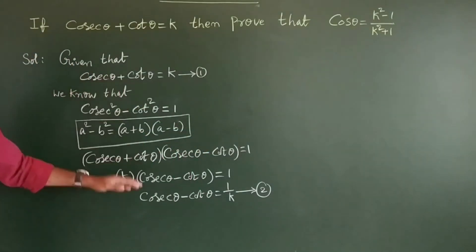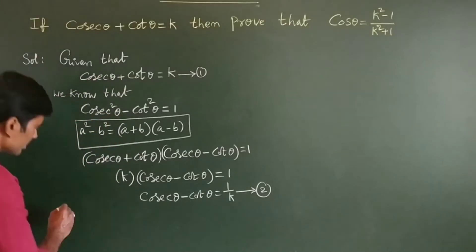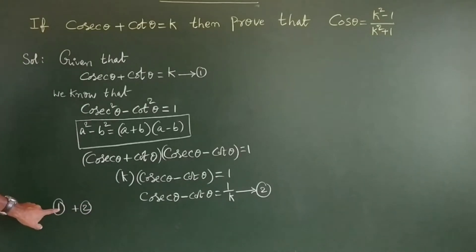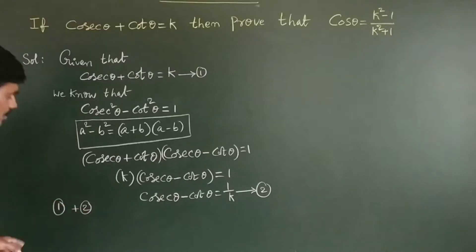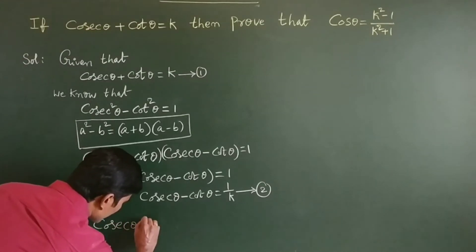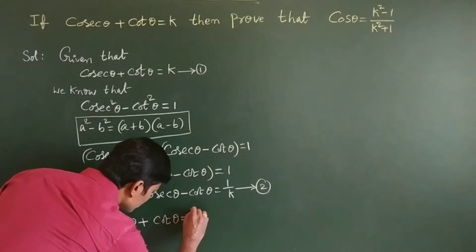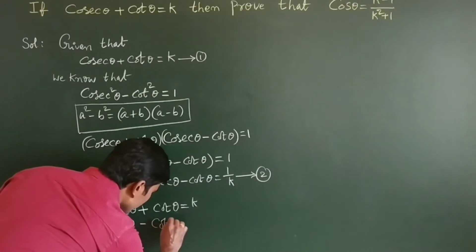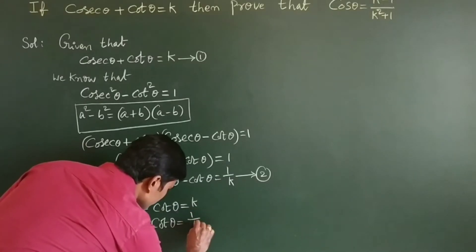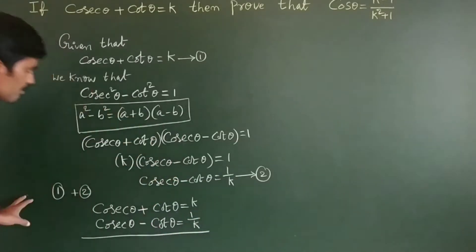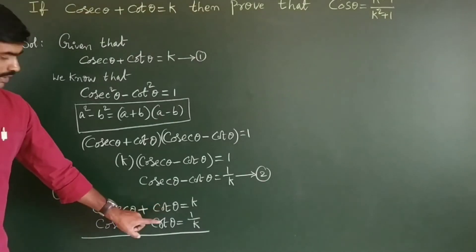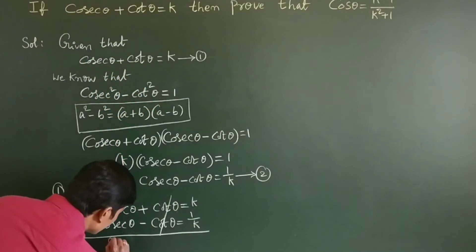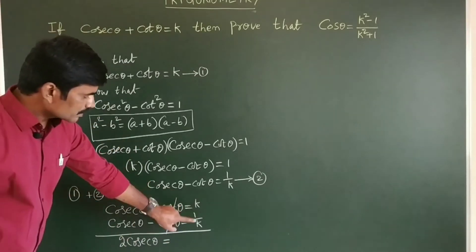Then, add equation 1 and equation 2. Equation 1: cosecant theta plus cot theta equals k. Equation 2: cosecant theta minus cot theta equals 1 by k. By adding these two equations, plus cot theta and minus cot theta will be cancelled. So 2 cosecant theta is equal to k plus 1 by k.